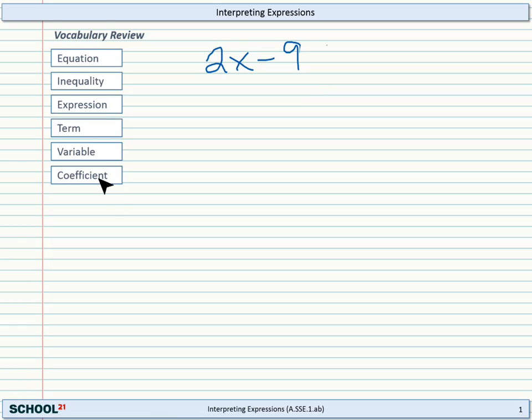And then finally, the term coefficient. What's the coefficient in this expression? There's only one. There could be more. Well, the coefficient is 2. That's the number that's out in front of the variable. Now that we've reviewed that vocabulary, let's take a look at some of the most important things you can interpret from expressions.